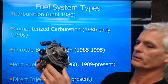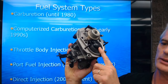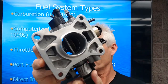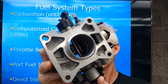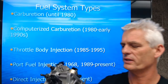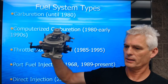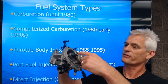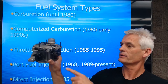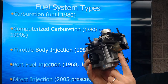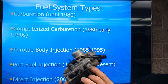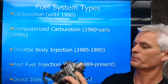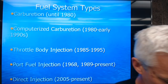Here's a throttle body injection unit. This one has one centrally located fuel injector. If I open the throttle plate and look down in there, you can see the nozzle — it's got about 10 little holes in it and it sprays fuel into the intake manifold. It's a fuel-mixing device. It has a fuel injector, a fuel pressure regulator, an idle air control motor to determine how much air goes in at idle, and a throttle position sensor to tell the computer how far open the throttle is and the rate at which you opened it.